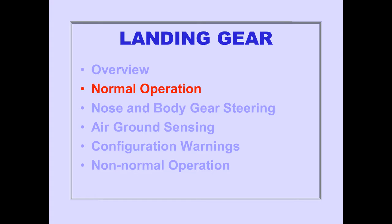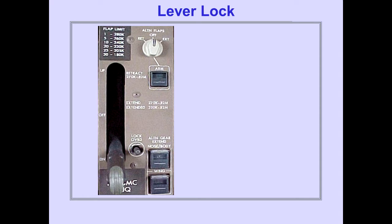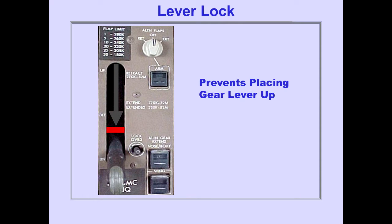Let's discuss normal landing gear operation. Gear lever down position pressurizes the down lock actuators, which locks the gear down and pressurizes the gear hydraulic actuators to the down position. The landing gear lever lock prevents placing the gear lever to the up position when on the ground or with unsafe conditions in flight.